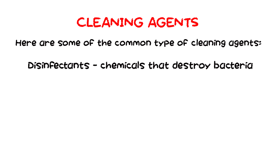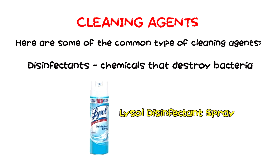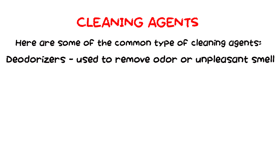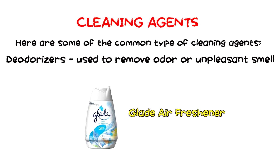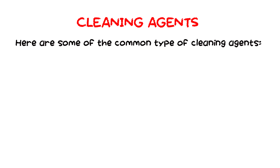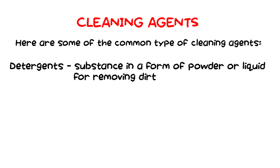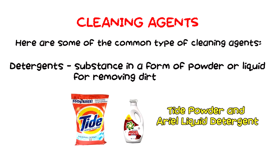Next are disinfectants. They are chemicals that destroy bacteria. An example is Lysol disinfectant spray. Another type of cleaning agent are deodorizers. They are used to remove or conceal unpleasant smell. An example is Glade air freshener. Next are detergents. They are either in a form of powder or liquid and are used for removing dirt. Examples are Tide powder and Ariel liquid detergent.